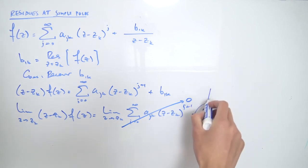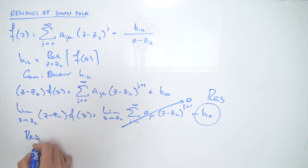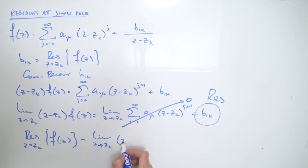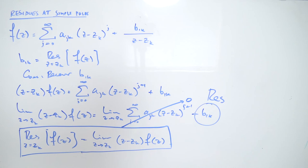So in fact, if we look at this equation, we get that the residue at Z equals Zk of our function F of Z is exactly equal to this limit. So we have the limit as Z approaches Zk of Z minus Zk times F of Z. And this is in fact the formula you would use to find the residue at a simple pole of a complex function.